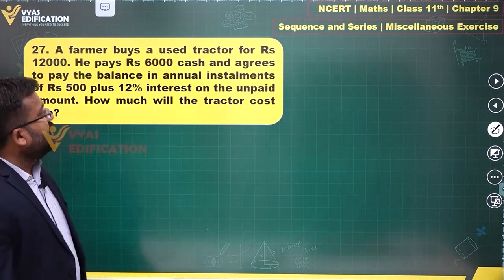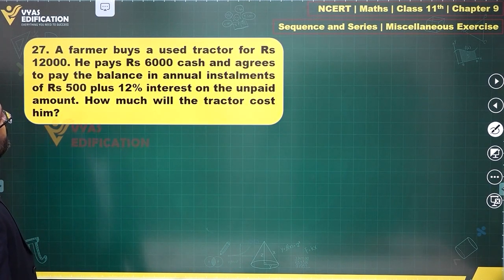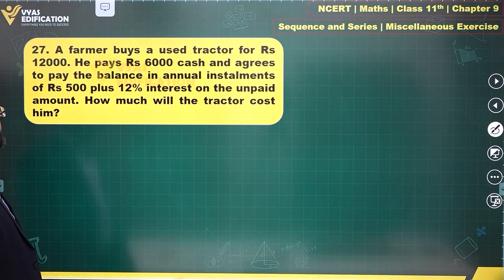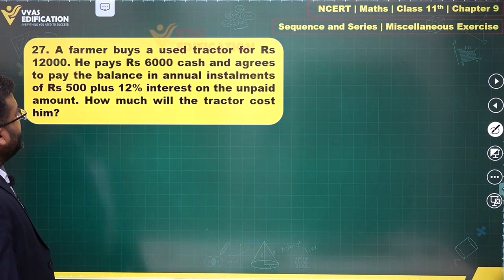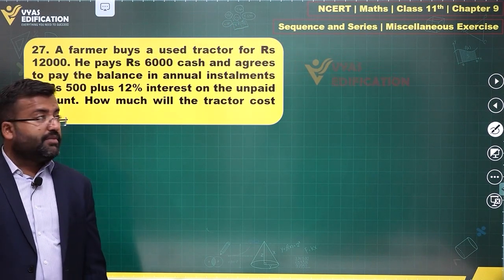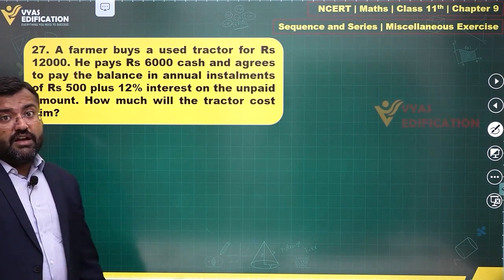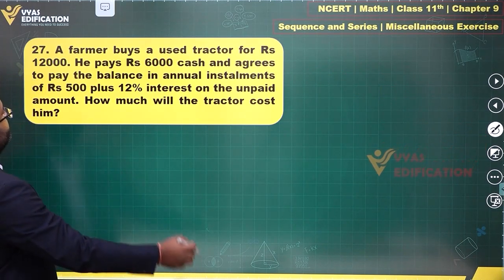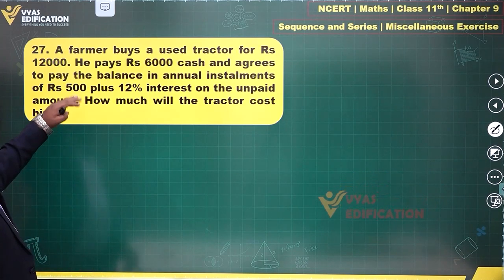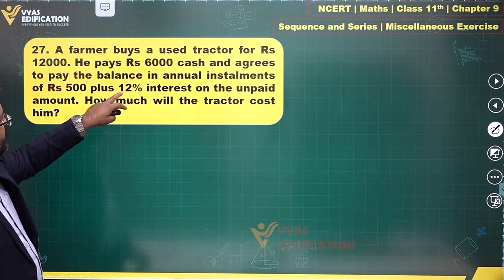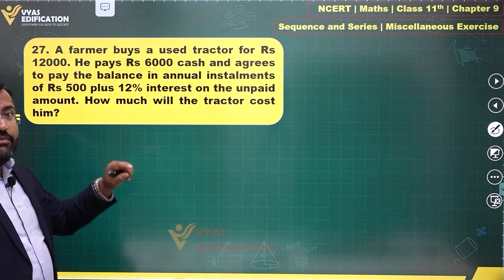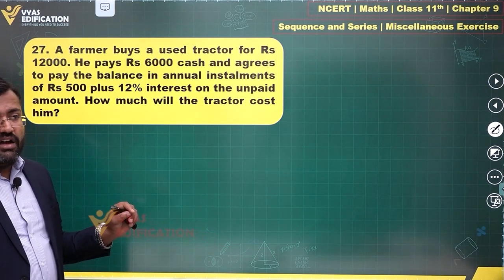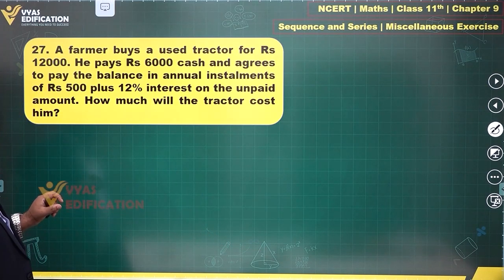So the key detail is 12 percent interest on the unpaid amount. He pays 6,000 rupees cash and agrees to pay the balance in annual installments of rupees 500 plus 12 percent interest on the unpaid amount. Annual installments would imply 12 installments.